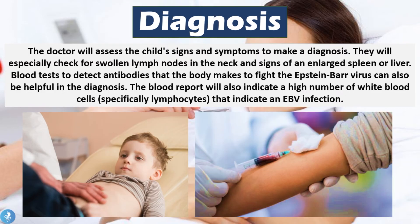For diagnosis, the doctor will assess the patient's signs and symptoms, especially checking for swollen lymph nodes in the neck and armpit regions and signs of an enlarged spleen or liver. Blood tests may also be used to detect antibodies that the body makes to fight the Epstein-Barr virus. The blood report can also indicate a high number of white blood cells, specifically lymphocytes, which indicate an active EBV infection.